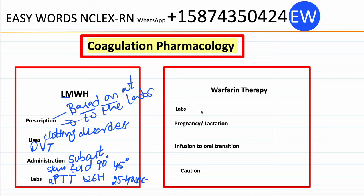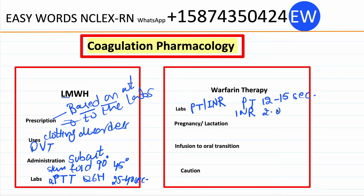For warfarin therapy, we should monitor PT and INR. In the beginning it is monitored daily, then weekly, then monthly once therapeutic levels are obtained. The normal PT value is 12 to 15 seconds and the therapeutic INR value is 2.0 to 3.5.